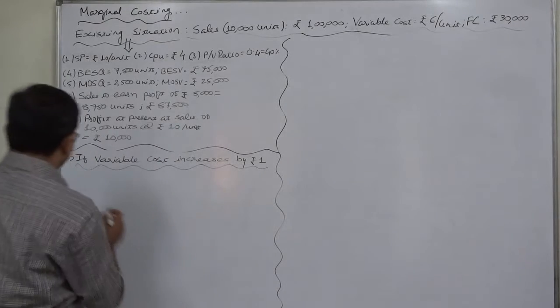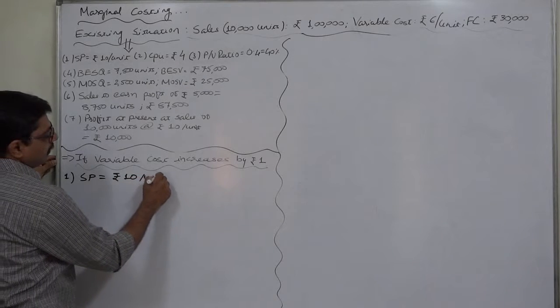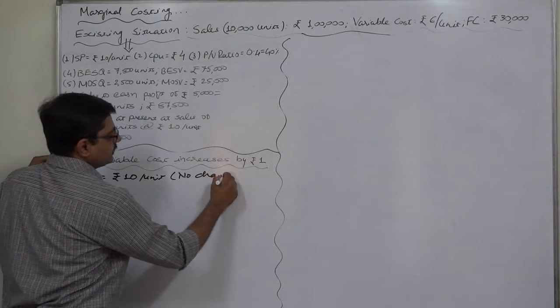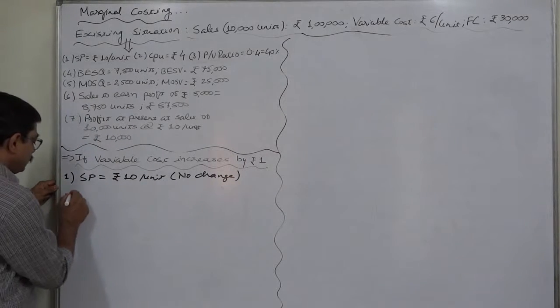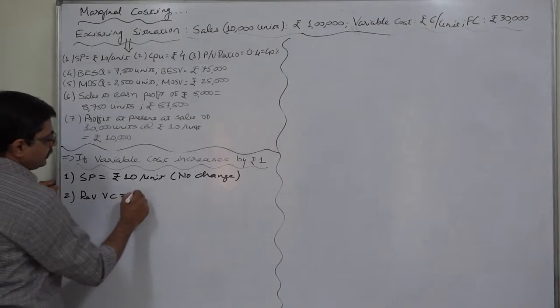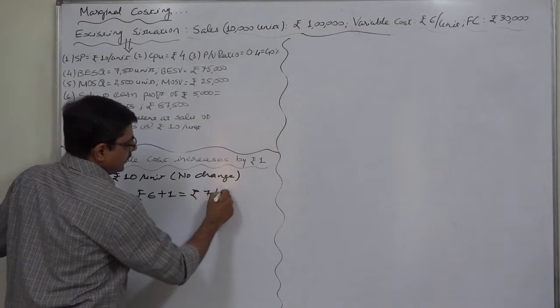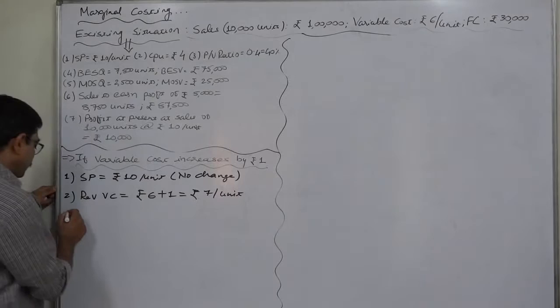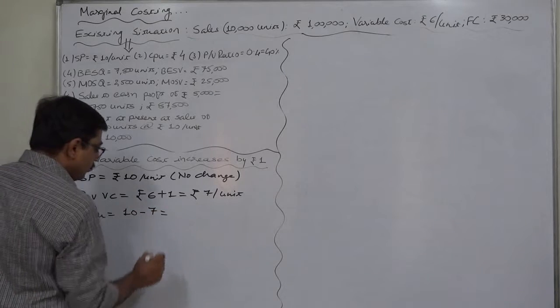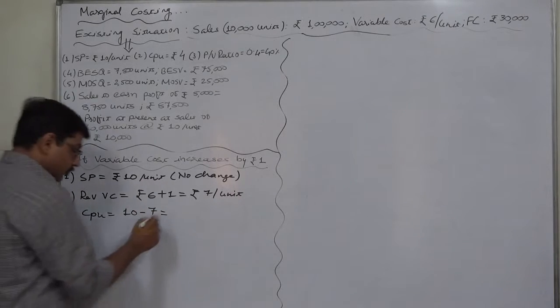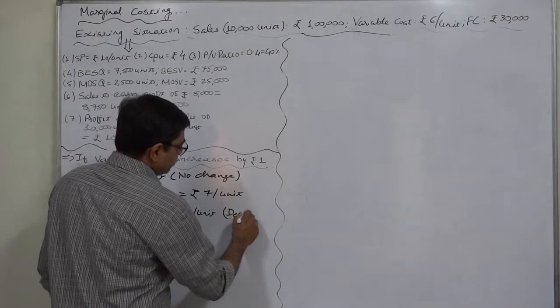First of all, the selling price will be ₹10 per unit, no change, because we are not going to change it. Number 2, revised variable cost: it will be now ₹6 plus 1 equals ₹7 per unit, and that will directly affect the contribution. It will be now selling price ₹10 minus revised variable cost ₹7, so now it will be ₹3 per unit. It has decreased.